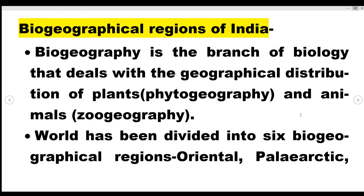Welcome back. We are discussing Plus 2 Biology Chapter 15, that is Biodiversity and Conservation. Today's video will discuss the biogeographical regions of India. Biogeography is a branch of biology that deals with the geographical distribution of plants and animals. Distribution of plants is known as phytogeography, and distribution of animals is known as zoogeography.